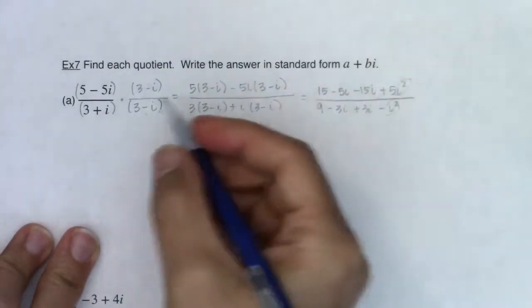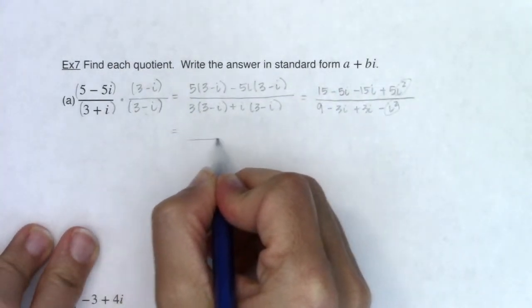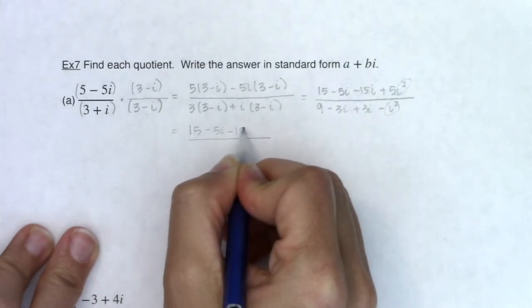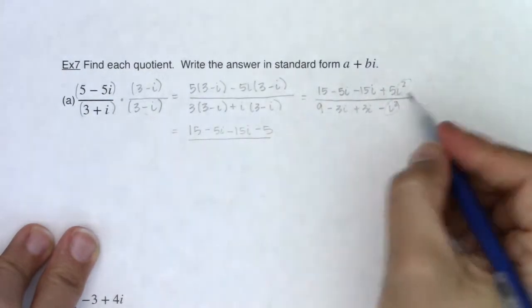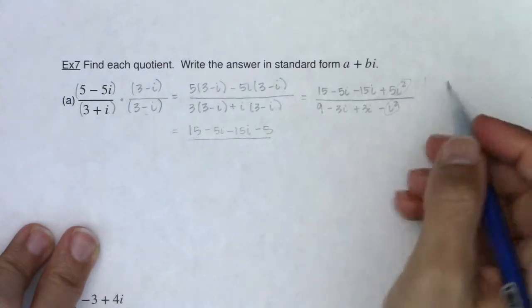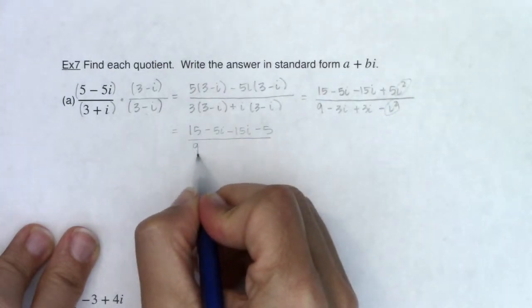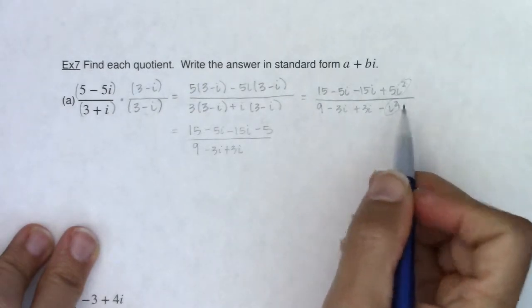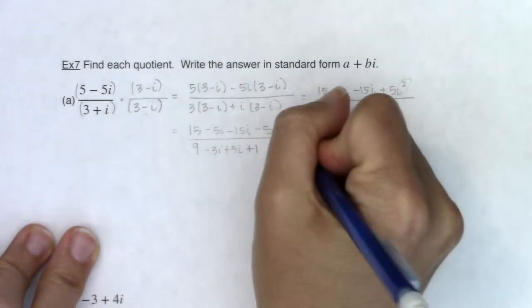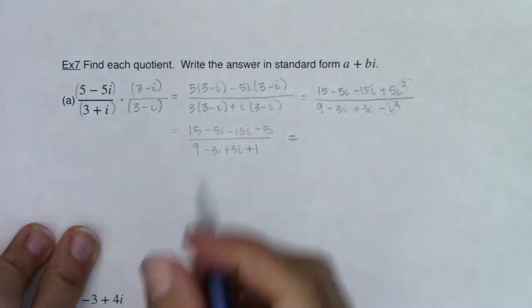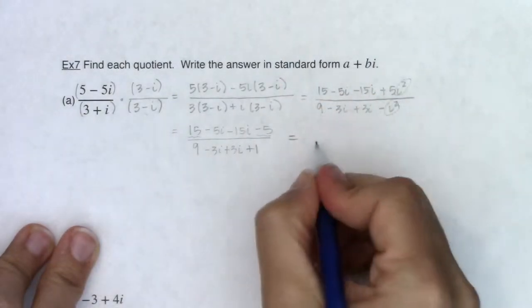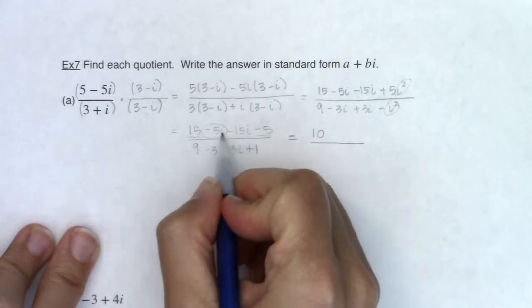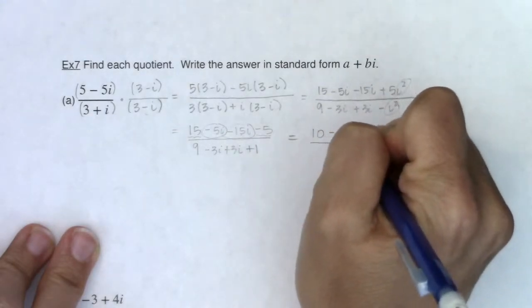I'm going to keep on going. I see my i squareds. I'm going to swap them out with negative ones. So I have 15 minus 5i minus 15i minus 5, because 5 times negative 1 will ultimately be negative 5. Here I have 9 minus 3i plus 3i, minus i squared would be plus 1. Let's see what kind of like terms I have now. On the numerator, I have a 15 and a minus 5, so I'm going to have a 10. And on the imaginary side of things, I have negative 5 minus 15, so I have negative 20i.